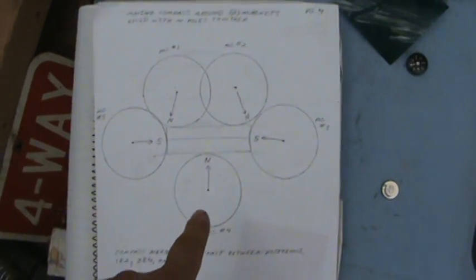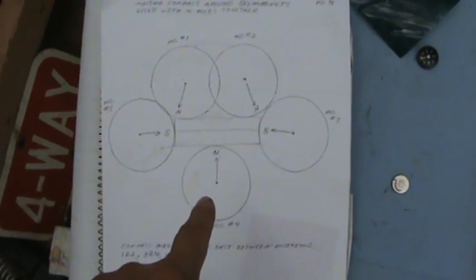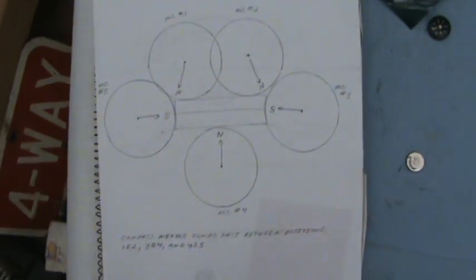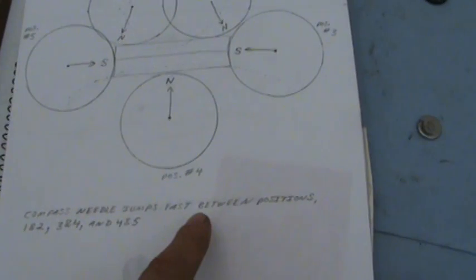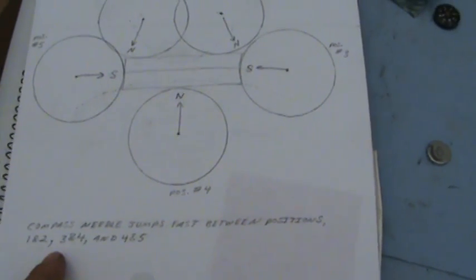It's like nothing. South, south, north. Now, compass needle jumps fast between positions one and two, three and four,